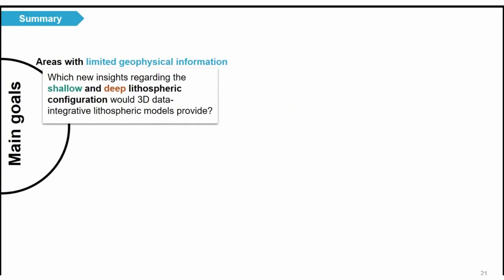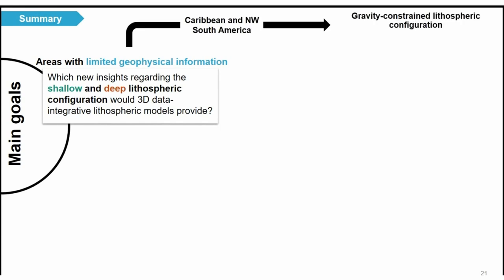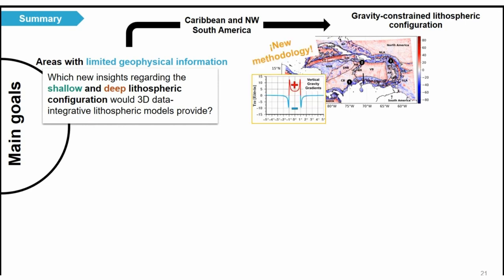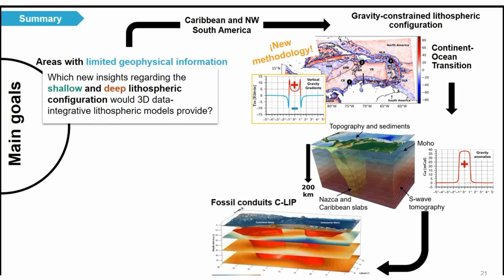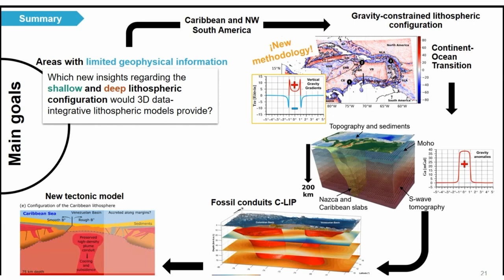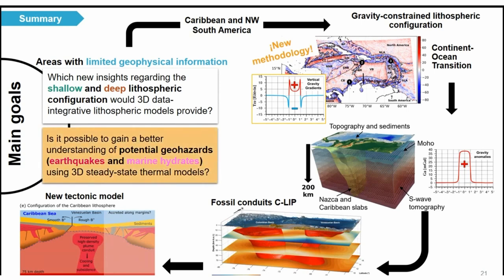Short summary: even in areas of limited physical information we can have new insights about crustal configuration using gravity. For the shallow domain, I defined a new methodology working with vertical gravity gradients, including the continent-ocean transition. For the deep structure, working with gravity anomalies and tomographic data, we were able to find what we interpret as fossil plume conduits of the Caribbean Oceanic Plateau. This allowed us to define an updated tectonic model. I'll now present how this workflow is also useful to understand geohazards in this region.